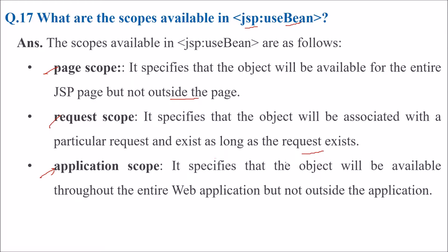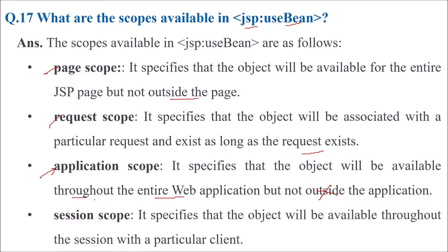Application scope specifies that the object will be available throughout the entire web application but not outside the application. Session scope specifies the object will be available throughout the session with a particular client.